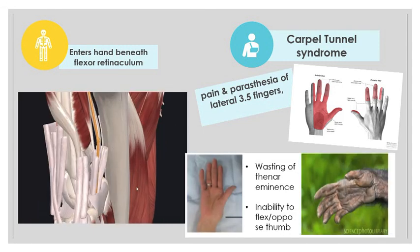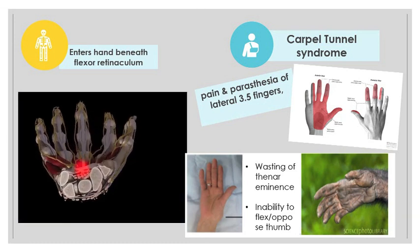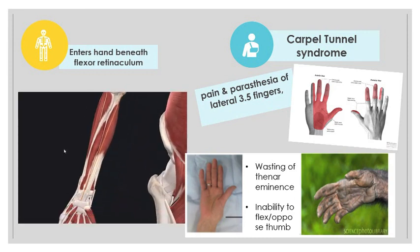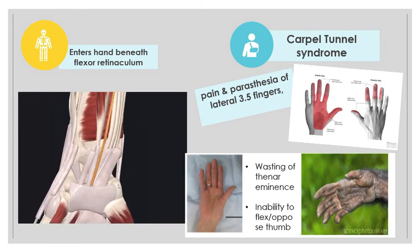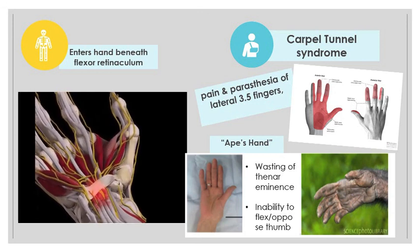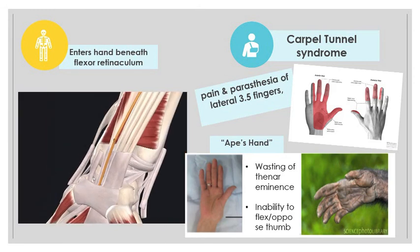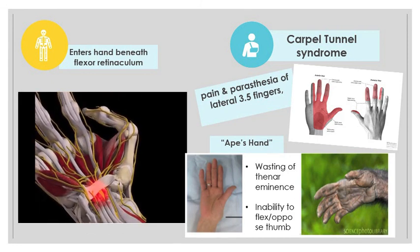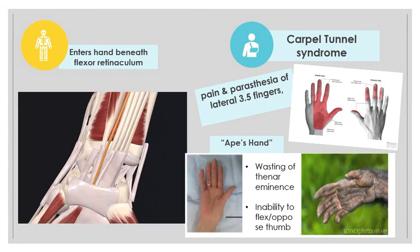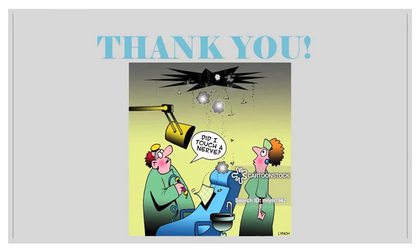The median nerve also innervates the muscles of the thenar eminence — those that flex and oppose the thumb. With injury you get wasting of the thenar eminence and loss of the ability to flex and oppose the thumb. Since opposition is the main difference between human and ape hands, this is often termed ape hand. The median nerve also innervates the pronators and flexors of the hand and wrist, so trying to make a full fist leaves only the little and ring fingers able to flex completely — this is called the hand of benediction. That concludes the quick recap of ulnar and median nerve injuries. Please do further reading and revisit your primary teaching material on upper limb nerve injuries.